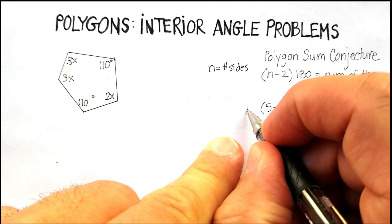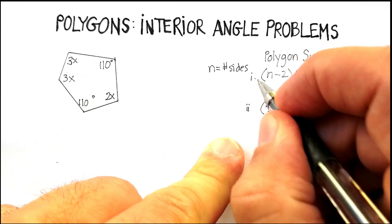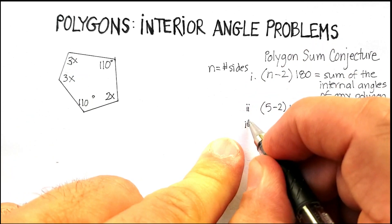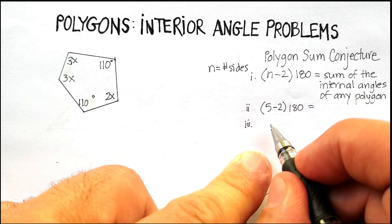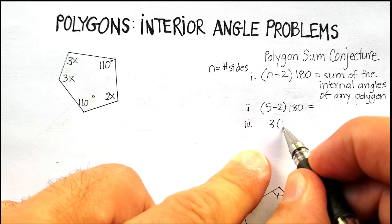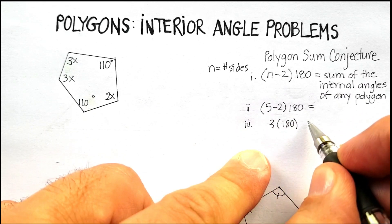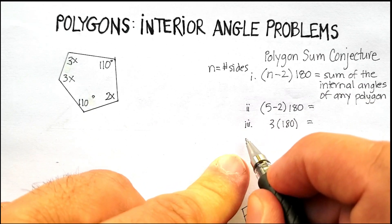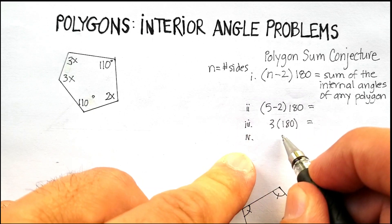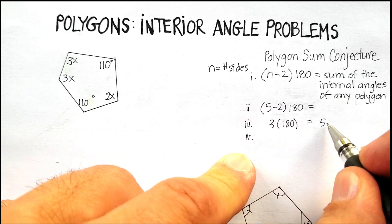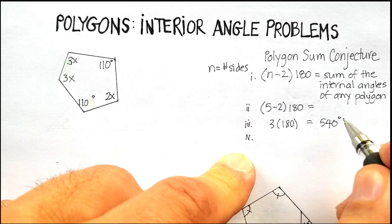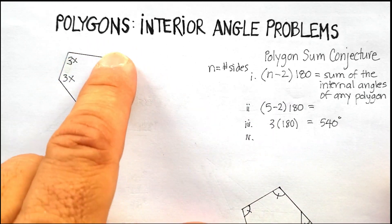So 5 minus 2, let me just go ahead and organize this. I like to put these little Roman numerals to separate my steps. I'm going to have 3 times 180, which will be equal to the sum. 3 times 180 is 540 degrees.